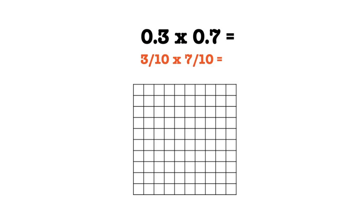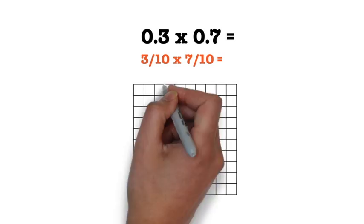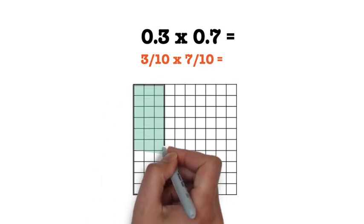Back to the problem of 3 tenths times 7 tenths. To create our model, we're going to start with our first fraction of 3 tenths. Remember the numerator tells us the parts and the denominator tells us how many are in the whole. Let's use the vertical columns of the 10 by 10 grid to model 3 tenths. Since the numerator is 3, we will shade in 3 of the 10 vertical columns.